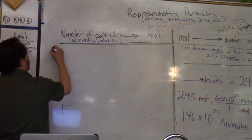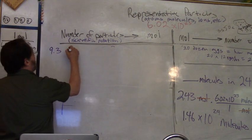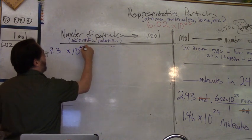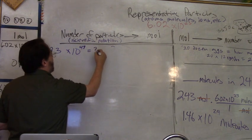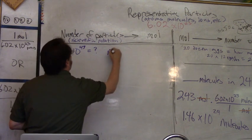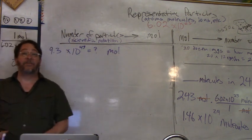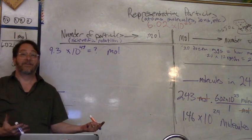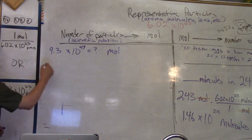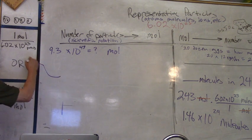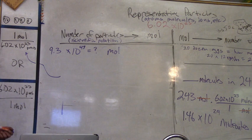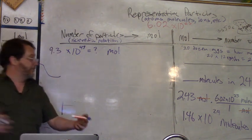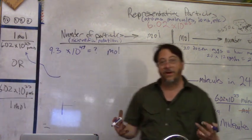Just to do one example, because people were having a real hard time with these. Like 9.3 times 10 to the 47th - is how many moles? This is the opposite. This is like I give you a number of eggs and I ask you how many dozen it is.